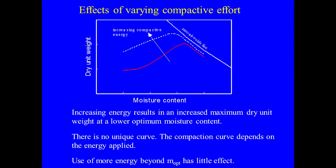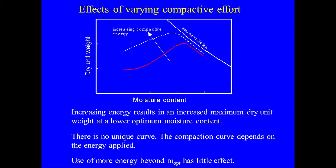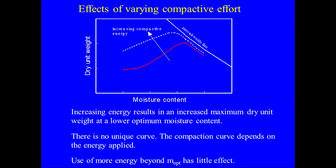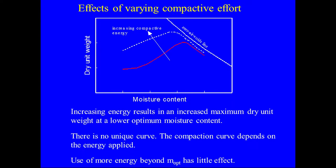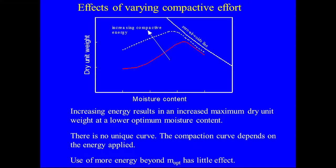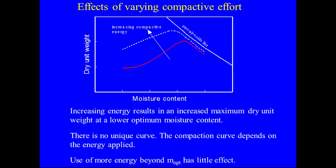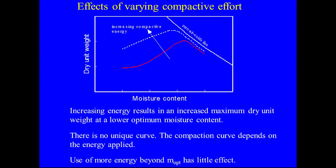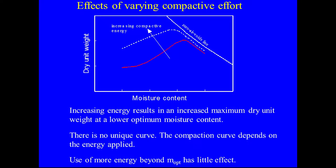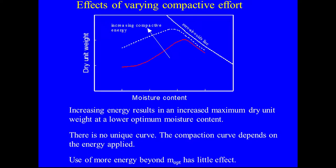Effect of varying compactive effort: increasing compactive energy results in increased maximum dry unit weight and a lower optimum moisture content. There is no unique compaction curve — it depends on the energy applied. Use of more energy beyond the optimum moisture content has little effect. Standard Proctor compaction and Modified Proctor compaction are both used; the Modified compaction is used for airfields and other applications where higher maximum dry density is required.